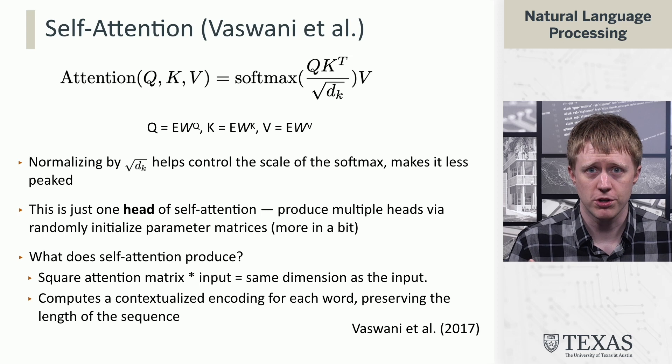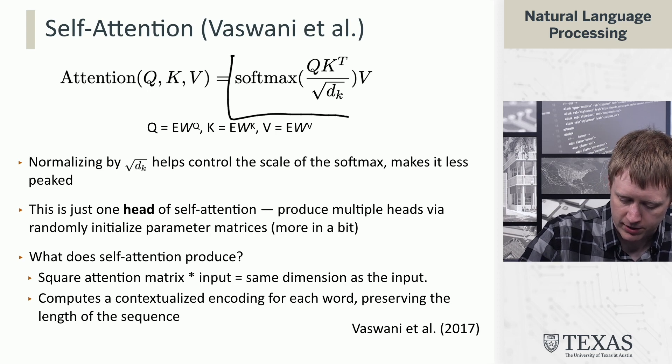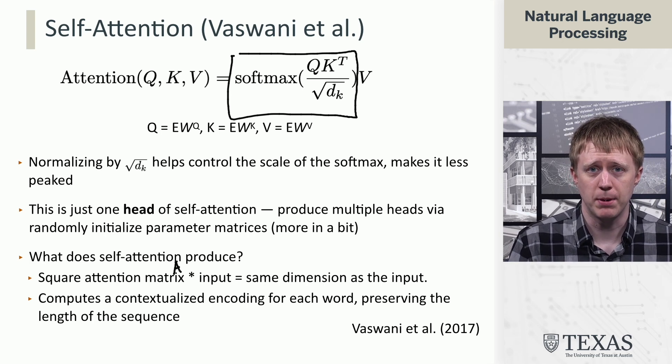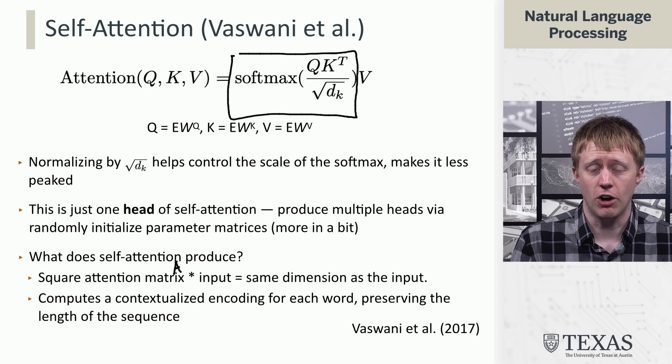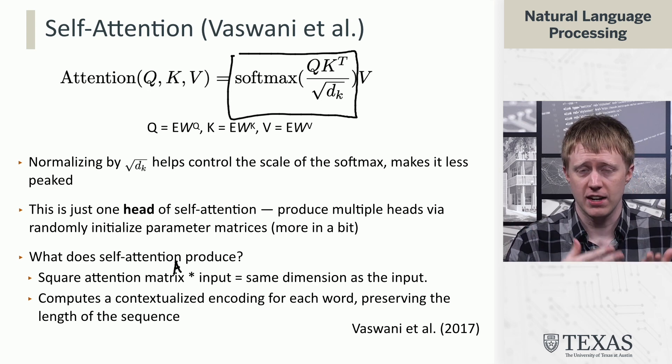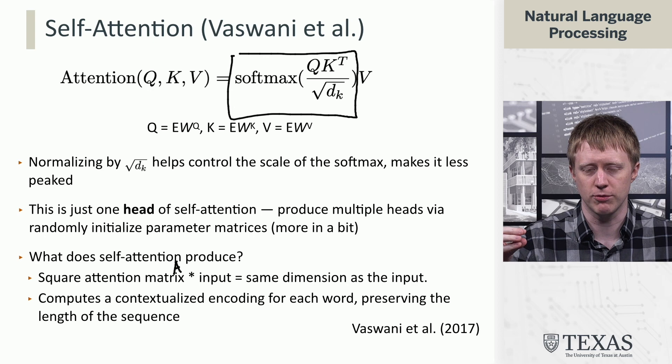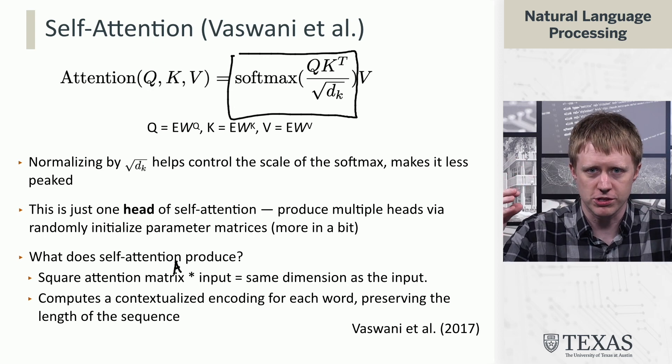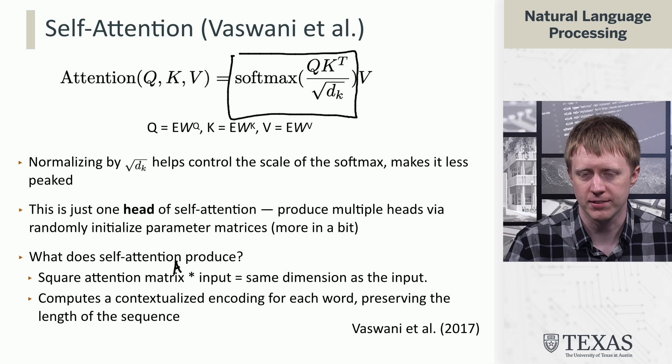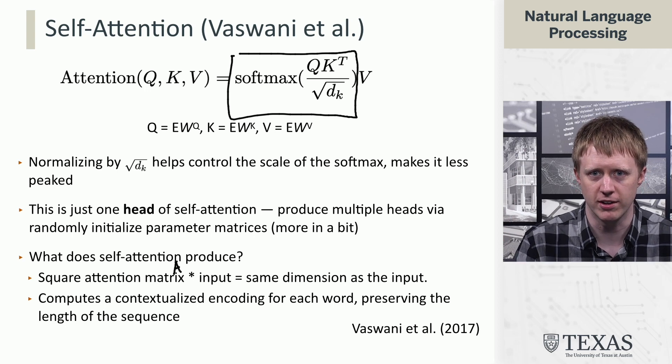In terms of what this produces, we get this square attention matrix A, which is the output of the softmax. Then we multiply that by the transformed form of the input, and ultimately it gives us something that's the same dimension as the input. We've gone through all this complexity, but the idea of self-attention or the API for it is very simple: you take a sequence of words and get back a new sequence of vectors, which are the same length as the original sequence, that now represent those words in context. We have this very powerful general purpose transformation that can contextualize representations of structured data.